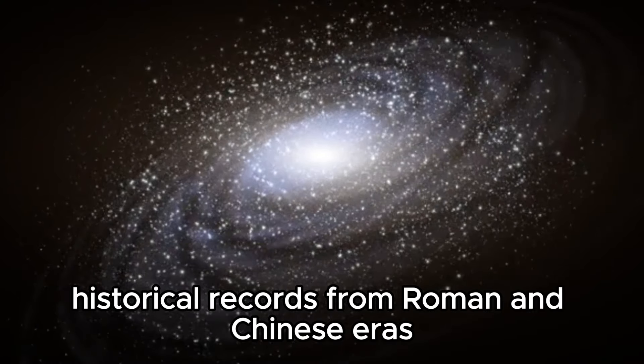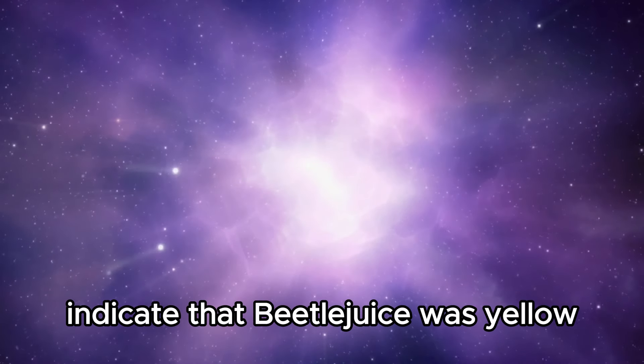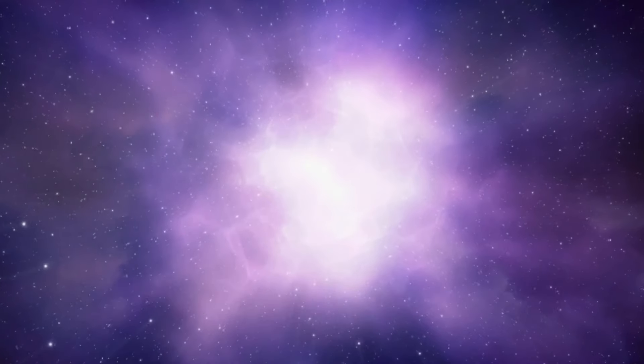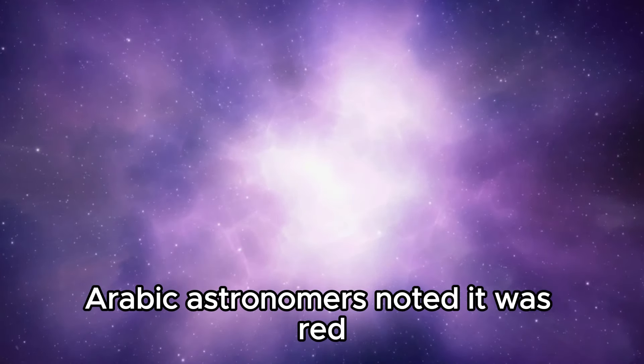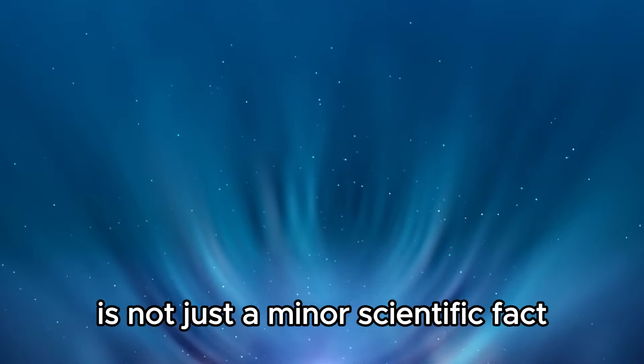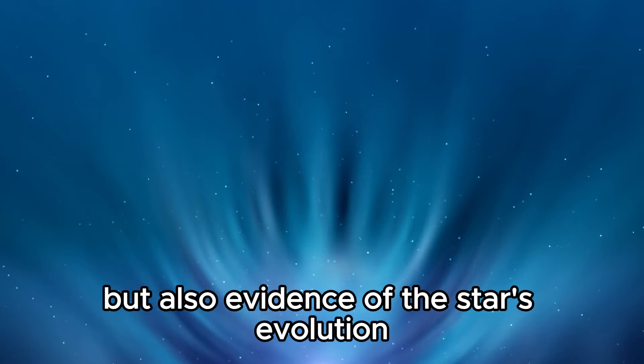This cooler temperature allows Betelgeuse to emit light at wavelengths that appear red to us. But this color isn't just about appearance. It reveals the star's physical state and the processes occurring within its vast gaseous volume. The fact that Betelgeuse's color has changed over time adds to its mystery. Historical records from Roman and Chinese eras indicate that Betelgeuse was yellow about 2,000 years ago. By the 9th century, Arabic astronomers noted it was red.